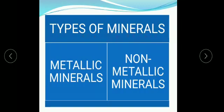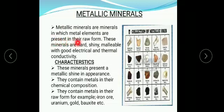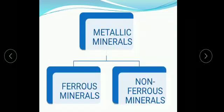Types of minerals: there are 2 types of minerals — metallic minerals and non-metallic minerals. Metallic minerals are minerals in which metal elements are present in their raw form. These minerals are hard, shiny, and malleable, with good electrical and thermal conductivity. Characteristics of metallic minerals: they present a metallic shine in appearance, they contain metals in their chemical composition, and they contain metals in their raw form. For example, iron ore, uranium, gold, bauxite, etc.